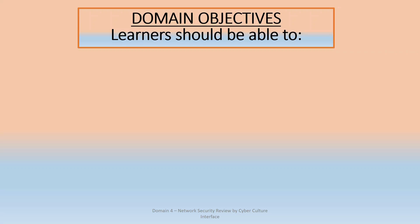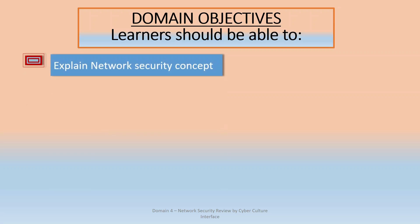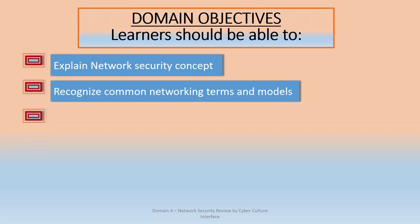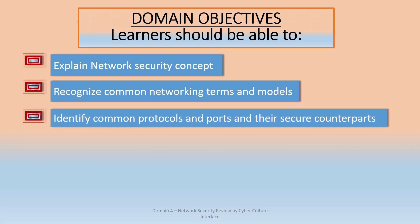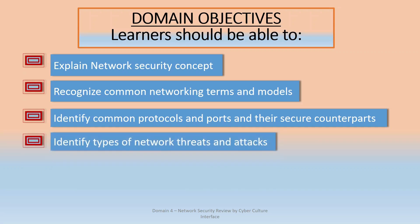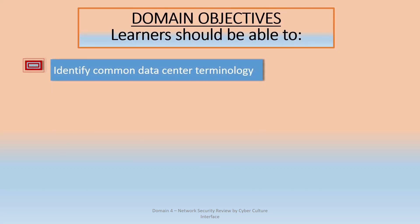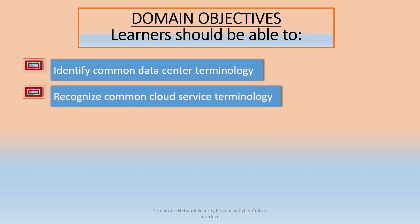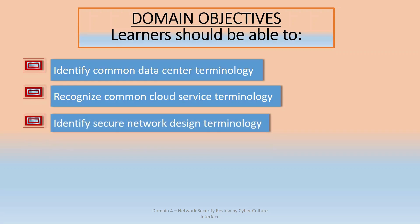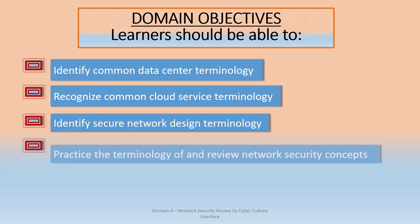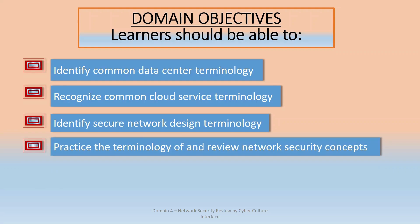These are the domain objectives in the ISC2 Certified in Cybersecurity (CC) Domain 4 — Network Security. A learner should be able to: explain network security concepts, recognize common networking terms and models, identify common protocols and ports and their secure counterparts, identify types of network threats and attacks, discuss common tools used to identify and prevent threats, identify common data center terminology, recognize common cloud service terminology, and identify secure network design terminologies.